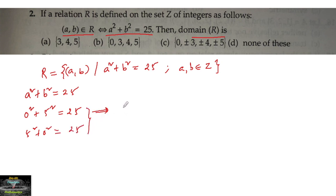From this, the possible ordered pairs are (0, ±5) or (±5, 0).